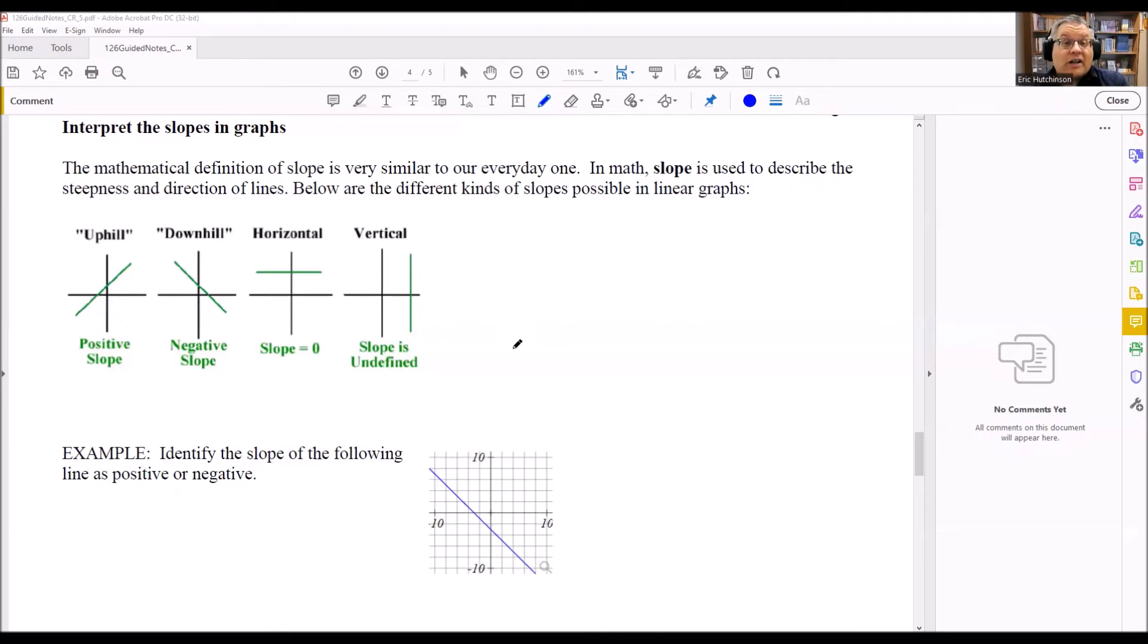And then if it's perfectly vertical like this, then we say the slope is undefined, or we say the slope is that's as large as it can possibly be.